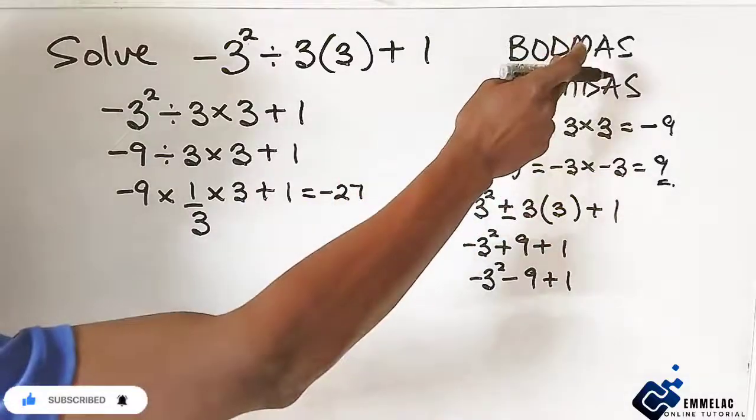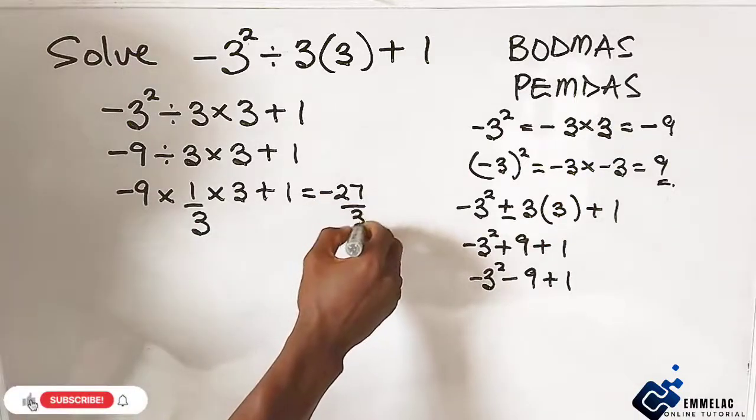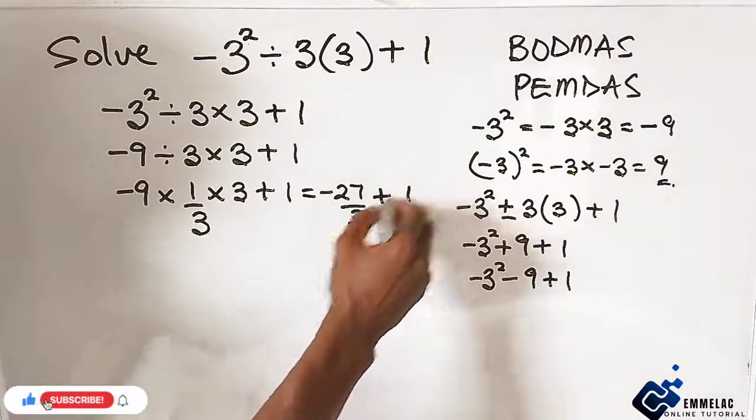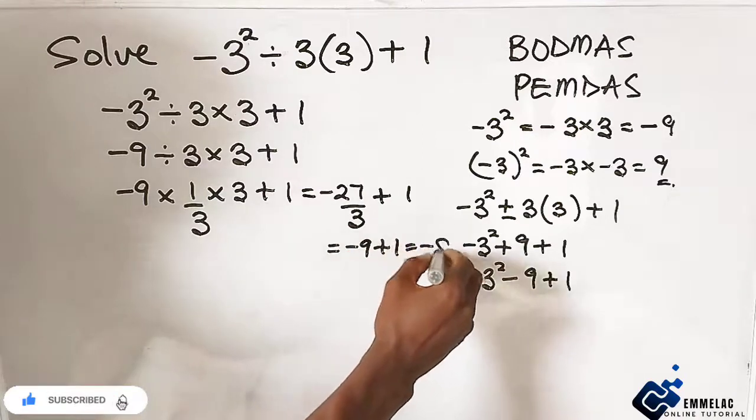Or if we are to apply this one, you see that we divide this by this, you see, give it the same thing. Over 3, now +1, which will give us -9 + 1, which is what? -8.